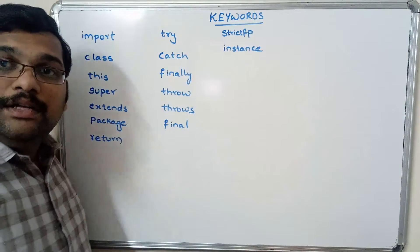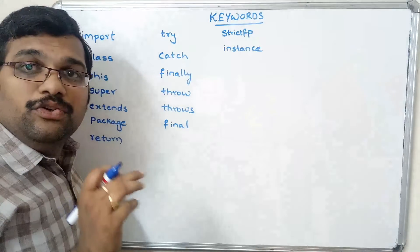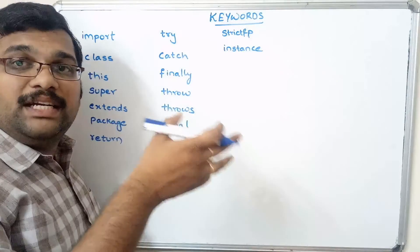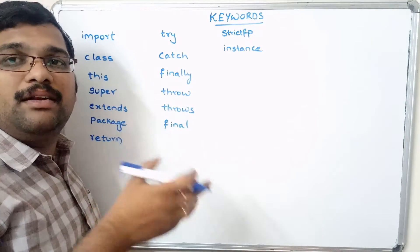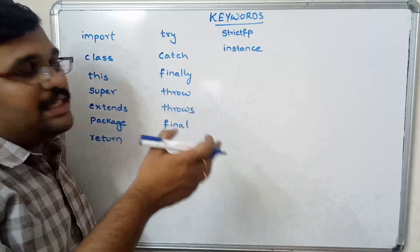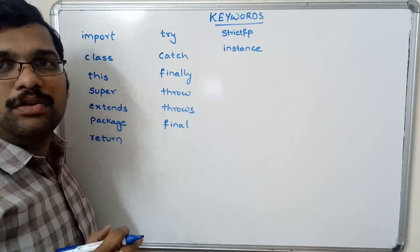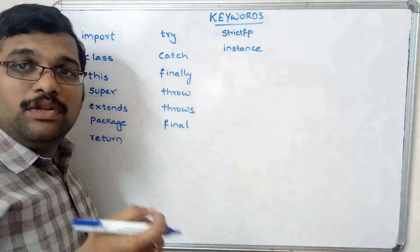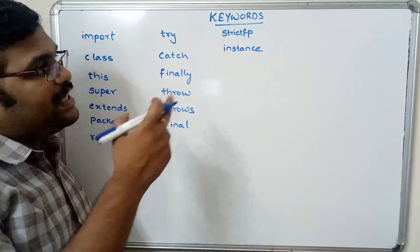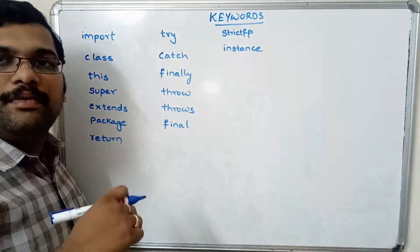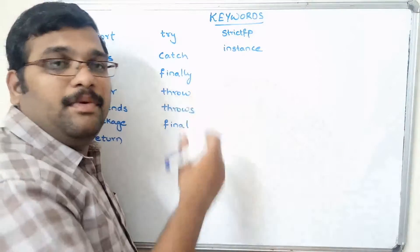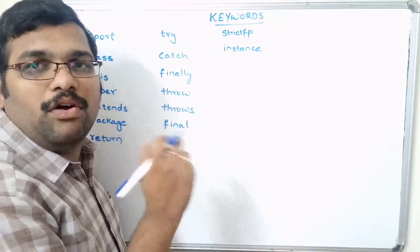The instanceof keyword is used to find whether an object is an instance of a particular class or not. As we know, an object is an instance of a class, and this keyword is used to check that relationship.